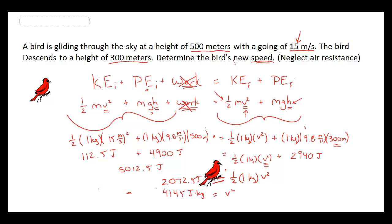What I end up solving is I have 4,145 joules equals my velocity squared. My last thing I'm going to do is take the square root of that number, and that will give me my pure velocity. So let's take the square root of 4,145. And what we find out is that the bird's new velocity, as expected, is a little bit faster, 64.4 meters per second.